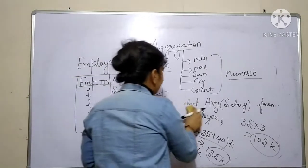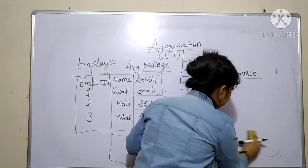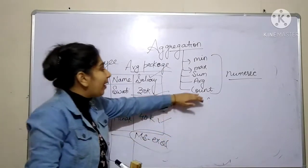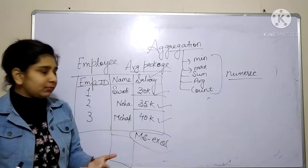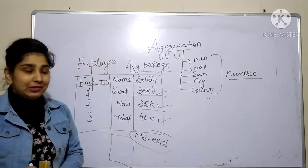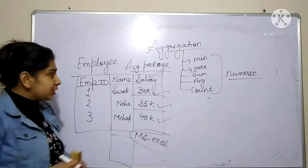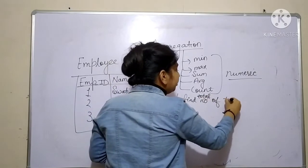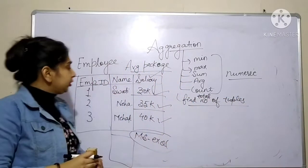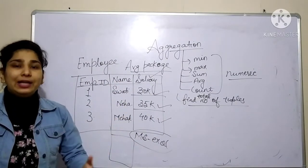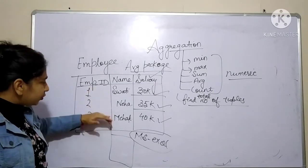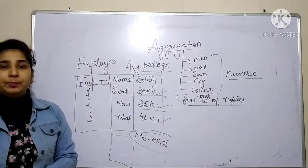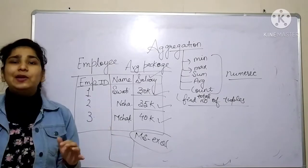Now let's discuss the fifth operation — the count operation. It also gives you a numerical value in the output. The count operation is basically used to find the total number of tuples in your relation. In this case we have 3 tuples, so the count operation will give you the answer 3.